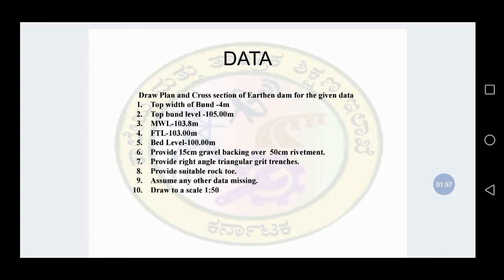The upstream slope is 1.5 to 1 and the downstream slope is 2 to 1. We are given to provide 15 centimeter gravel backing over 50 centimeter revetment. We need to provide right angle triangular grip trenches and suitable rock toe. Any other necessary data may be assumed. The scale given is 1 to 50.